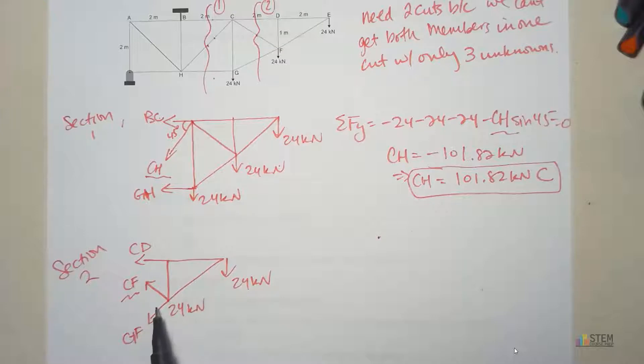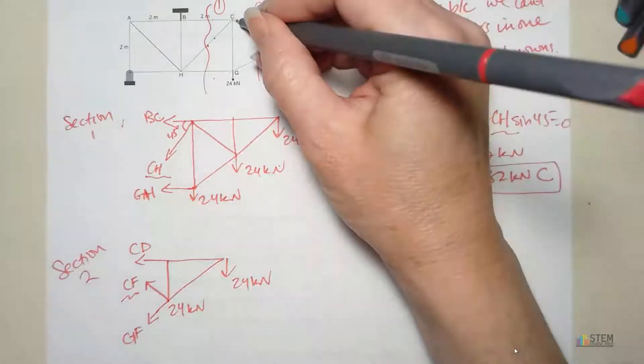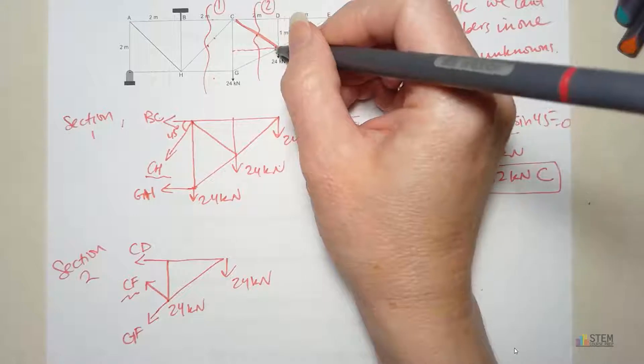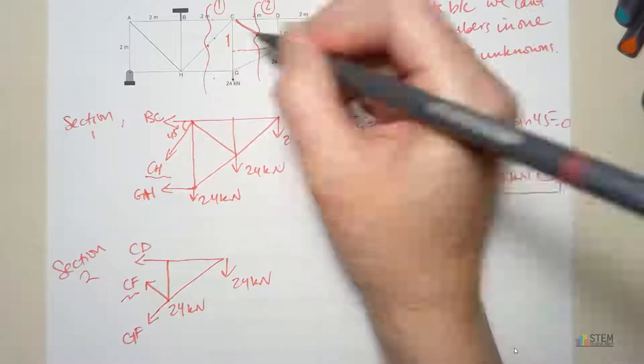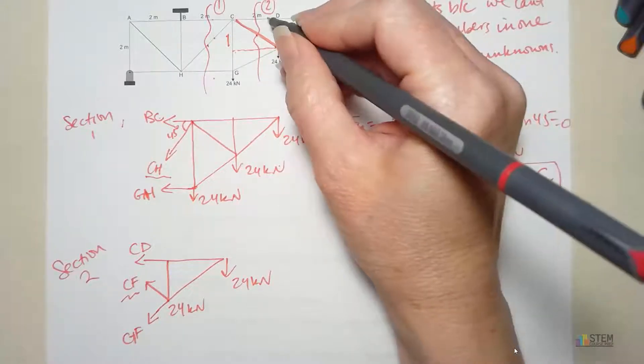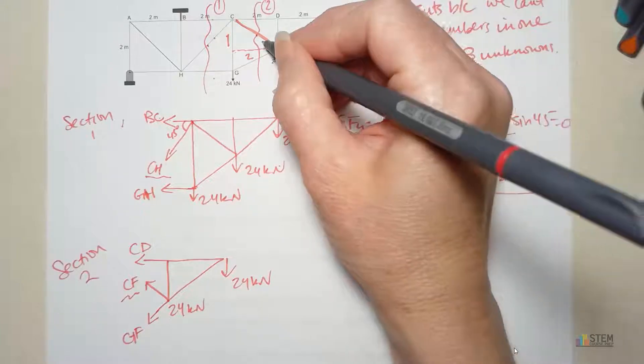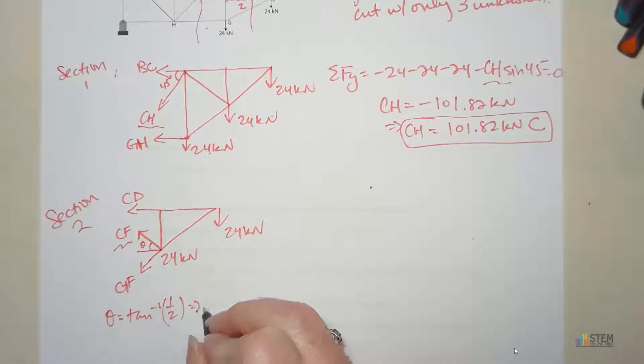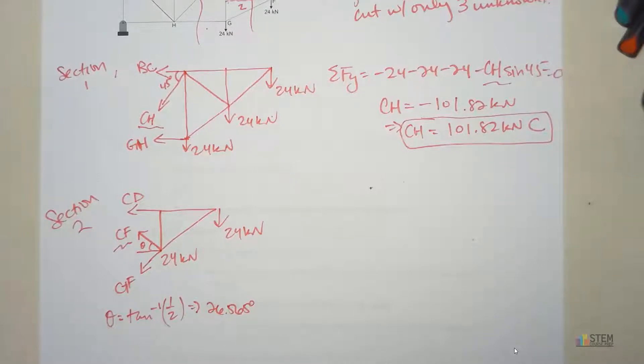Before we get started though, we need to figure out our angles here. We don't know what these angles are. So now if we look, we're looking at this member right here. And we want to know this angle. If you look, if you draw this line here, this is one from right here. And then this right here is two. So we can use the arc tangent to find this theta. And theta will then be the arc tangent of one over two. What does that give us? It gives us 26.565 degrees. So now we're done finding that. We have everything we need now.